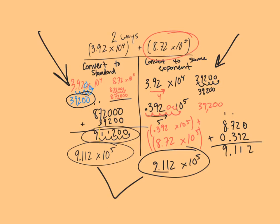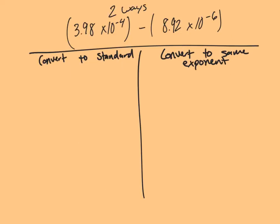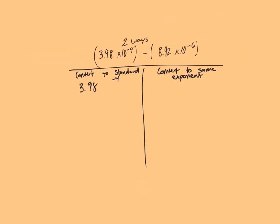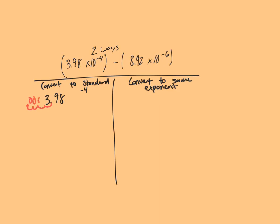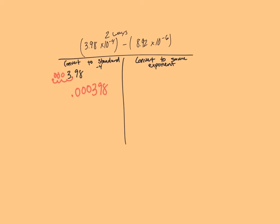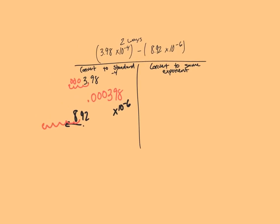Subtraction gets a little hairy because we do have some of those borrowing tools that we need. So here are two subtraction problems: 3.98 times 10 to the negative fourth, minus 8.92 times 10 to the negative sixth. For the first one, I'm going to convert both numbers to standard notation. For 3.98 times 10 to the negative fourth, I move my decimal four spots to the left, adding three zeros, giving me 0.000398. For 8.92 times 10 to the negative sixth, I move six spots to the left, filling in five zeros, giving me 0.00000892.